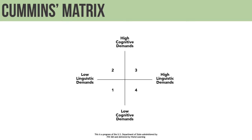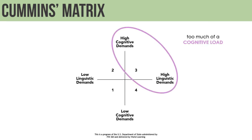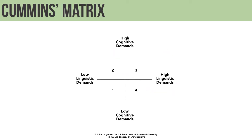Items that fall into quadrant 3 will probably represent too much of a cognitive load on our students. It should be noted that for teaching purposes, it is good practice to start a lesson in quadrant 1, perhaps by reviewing related vocabulary, and then moving students to quadrant 2, and finally to quadrant 3.